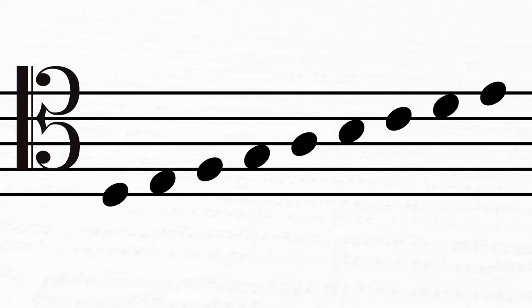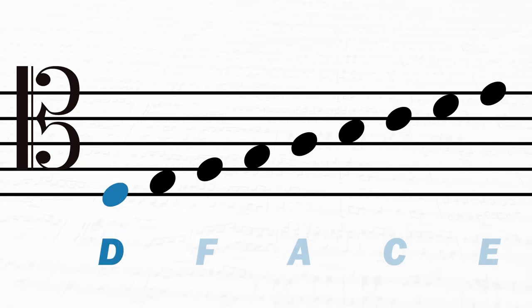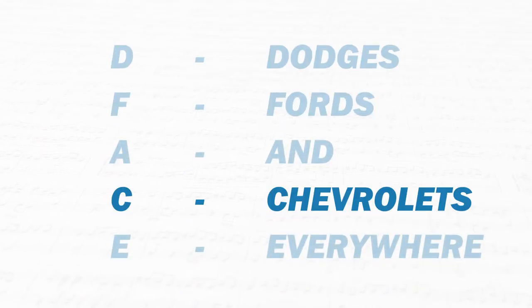That can be kind of confusing to remember though, so what's a way I can memorize which letters go where? Let's think back to the musical staff. We have five lines and four spaces in between those lines. And if you look at just the notes we have on the lines in tenor clef, we have D, F, A, C, and E. To remember this, we could use the acronym Dodges, Fords, and Chevrolets everywhere.